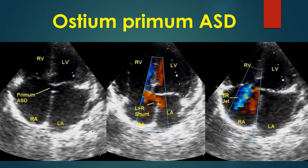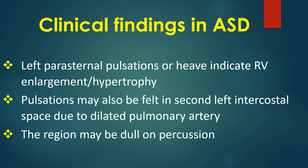Spontaneous closure is unlikely in ostium primum atrial septal defects. Echocardiogram from the apical 4-chamber view shows ostium primum ASD; both AV valves are at the same level, indicating no atrioventricular septum — no part of the septum exists between the ASD and the AV valves, unlike in secundum ASD. The middle panel shows left to right shunt across the ASD; the right panel shows a bluish mosaic tricuspid regurgitation jet. Left parasternal heave indicates right ventricular enlargement or hypertrophy. Pulsations may also be felt in the second left intercostal space due to a dilated pulmonary artery, which may be dull on percussion.